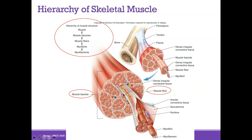Here's a diagram to refer to. The muscle has bundles of fascicles; a fascicle is a bundle of muscle fibers. Zooming into a fascicle, each individual element is a muscle fiber — this is a muscle fiber, this is a muscle fiber, this is a muscle fiber. We'll now zoom into one of these muscle fibers.